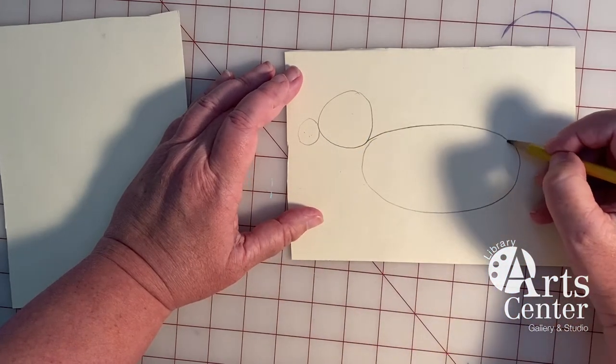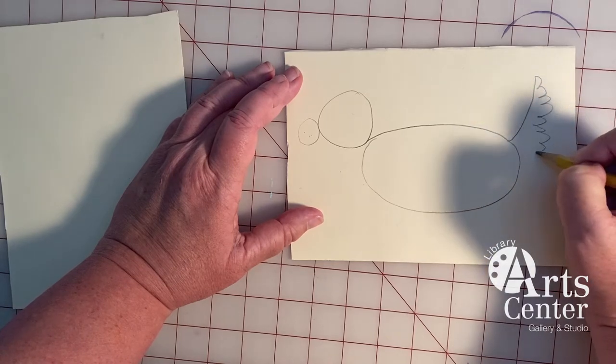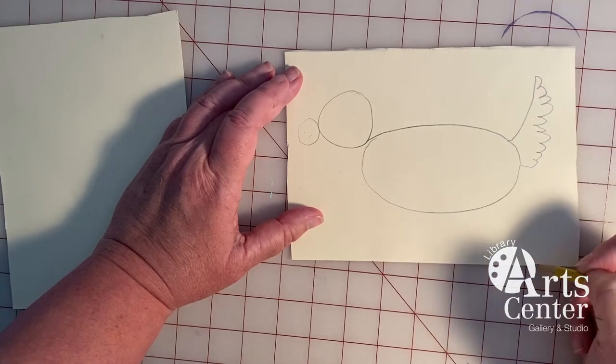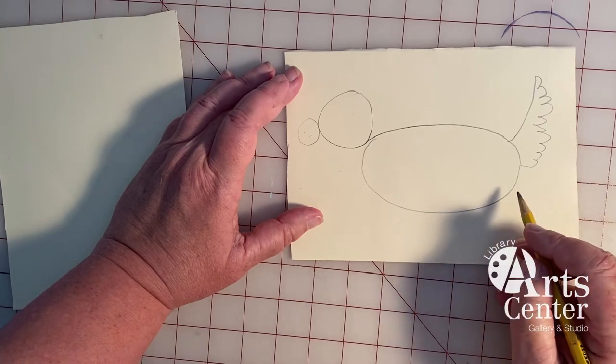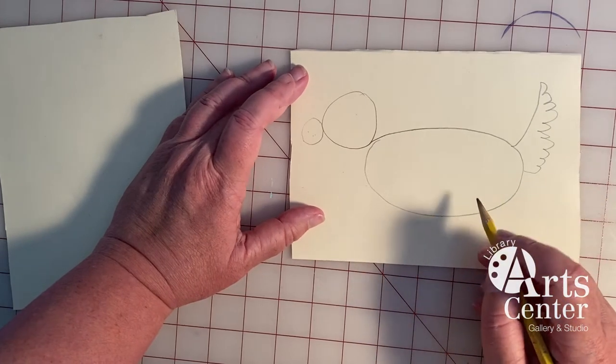I'm going to add a tail. Here it is. Big fluffy dog tail. Now I'm going to start connecting the pieces and it's going to look a lot more like a dog.